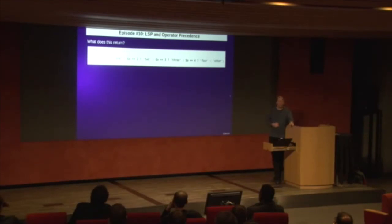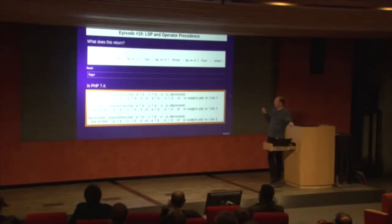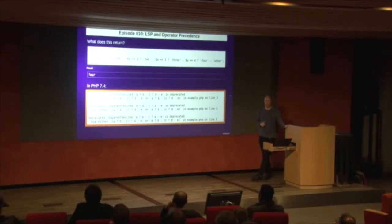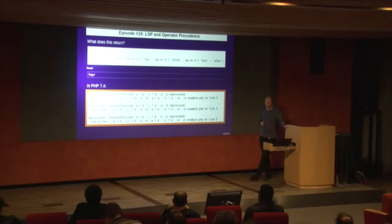What is the result of this line of code? The answer should be: you should never write code like this. It returns 4, in case you cared. PHP 7.4 will now warn you if you don't use parentheses with your ternaries. If you don't use parentheses, you get a deprecation warning telling you to please use parentheses, because in PHP 8 you're going to have to do that anyway — it will no longer parse. So keep an eye on this, and never ever write code like this.